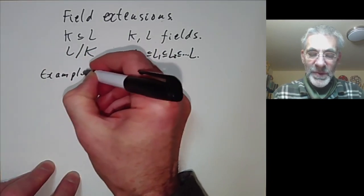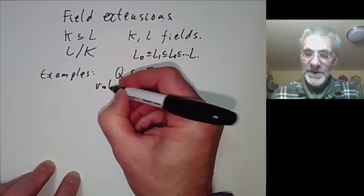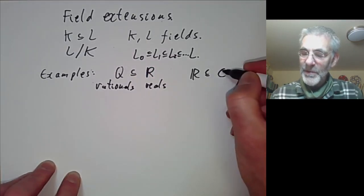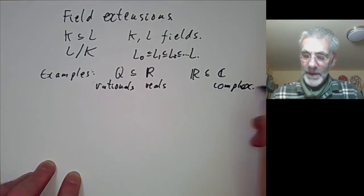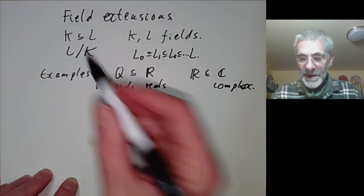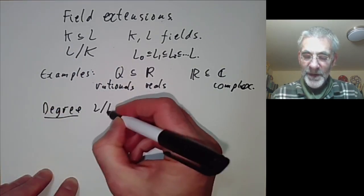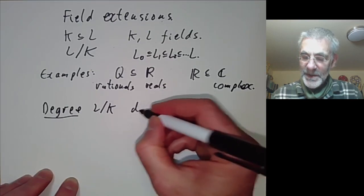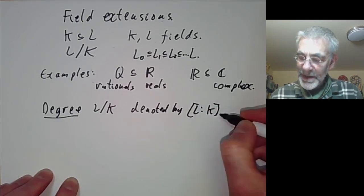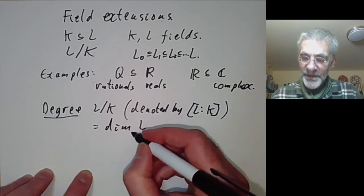Here are some basic examples. We can have the rational numbers contained in the reals, and the real numbers are contained in the complex numbers. These are two standard examples of extensions. If we've got an extension, we define the degree of the extension L over K. This degree is denoted by [L:K] in square brackets, and this is just the dimension of L as a vector space over K.